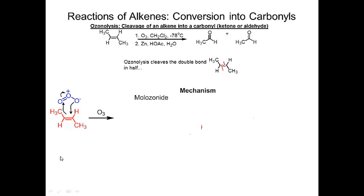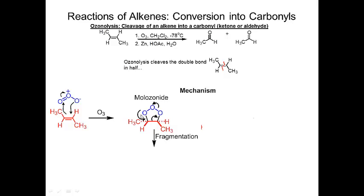First, ozone comes in and reacts with the double bond: this oxygen attacks this carbon, then the double bond attacks this oxygen and this pair of electrons gets moved over. That gives a molozonide intermediate, which is very unstable and doesn't stay that way. It breaks down, and when it breaks down through this pathway, you can see this bond forms a pi bond here, and then this oxygen donates a pair of electrons to put a pi bond there, and then this O-O bond breaks.